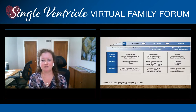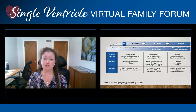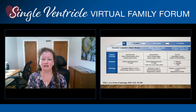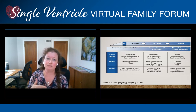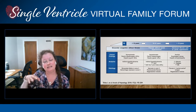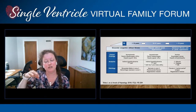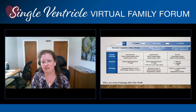Ten to fifteen years after the Fontan operation, we start seeing more scar tissue develop typically. You wouldn't notice much clinically — maybe a little congestion feeling again — but we're going to start potentially seeing liver numbers become more abnormal. The liver numbers — your AST, ALT, and GGT — start to rise a bit. If we were to biopsy the liver, we'll see more scar tissue developing in a lacy pattern where those dilations are.